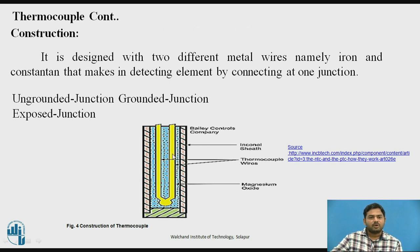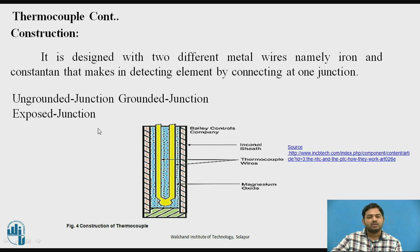Now, thermocouple construction. These two are different types of wires. This joined point is called the hot junction. The structure includes metal oxide components and protection circuits. It is made of an alloy of iron and constantan.